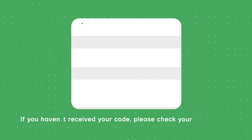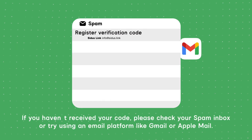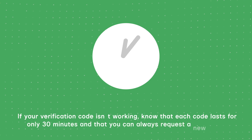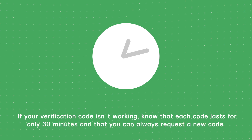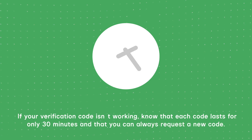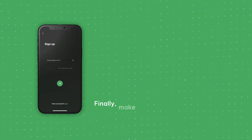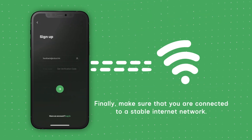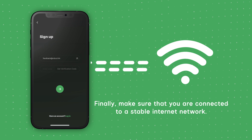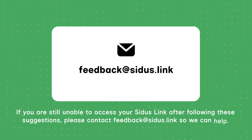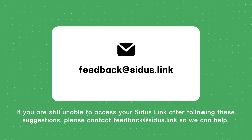If you haven't received your code, please check your spam inbox or try using an email platform like Gmail or Apple Mail. If your verification code isn't working, know that each code lasts for only 30 minutes, and that you can always request a new code. Finally, make sure that you're connected to a stable internet network. If you're still unable to access your CitusLink after following these suggestions, please contact feedback at Citus.link so we can help.